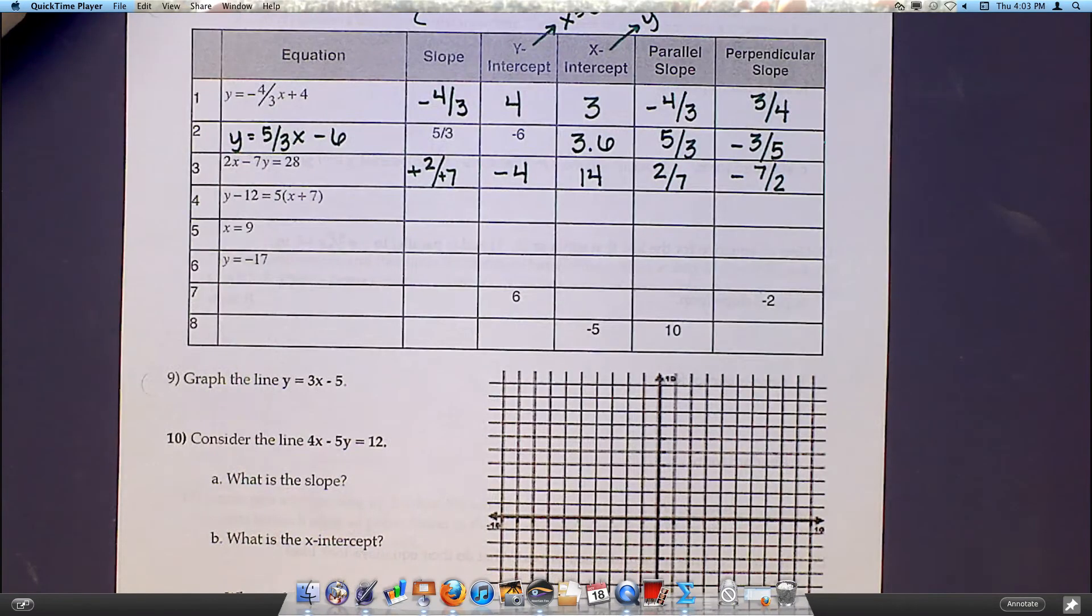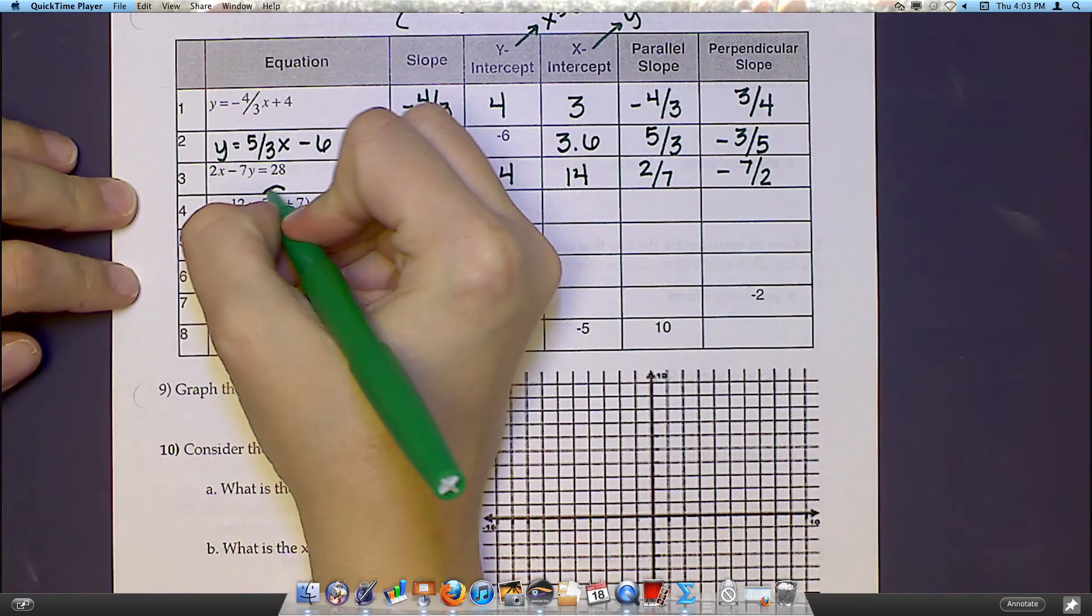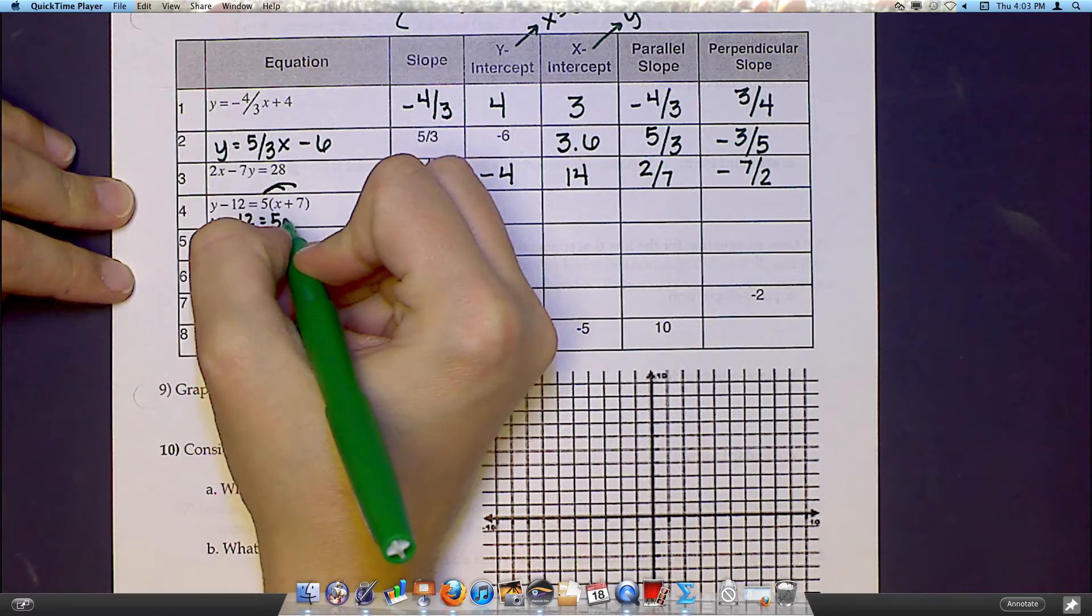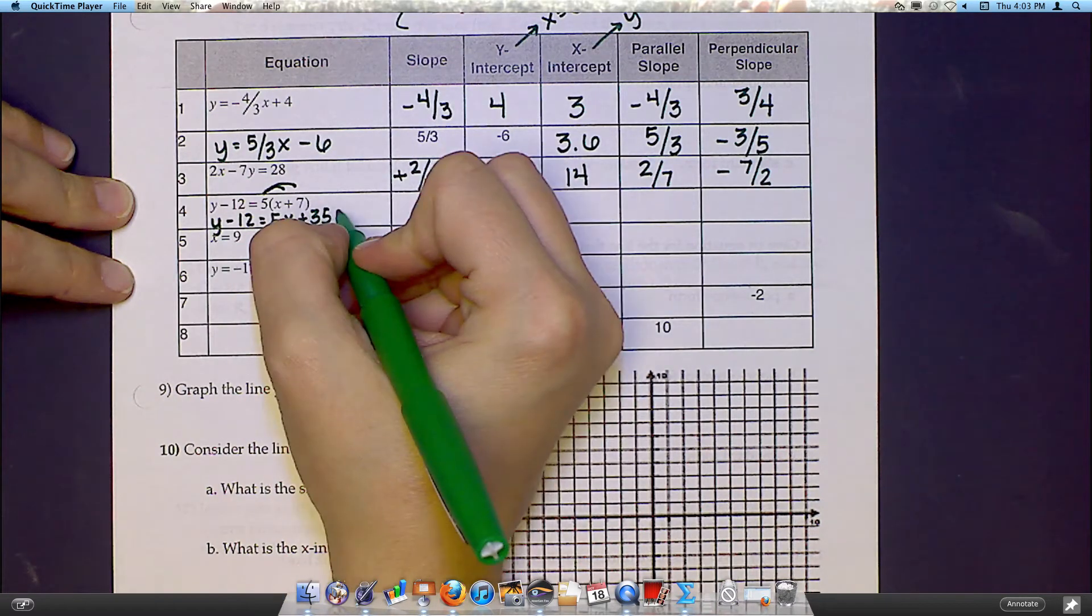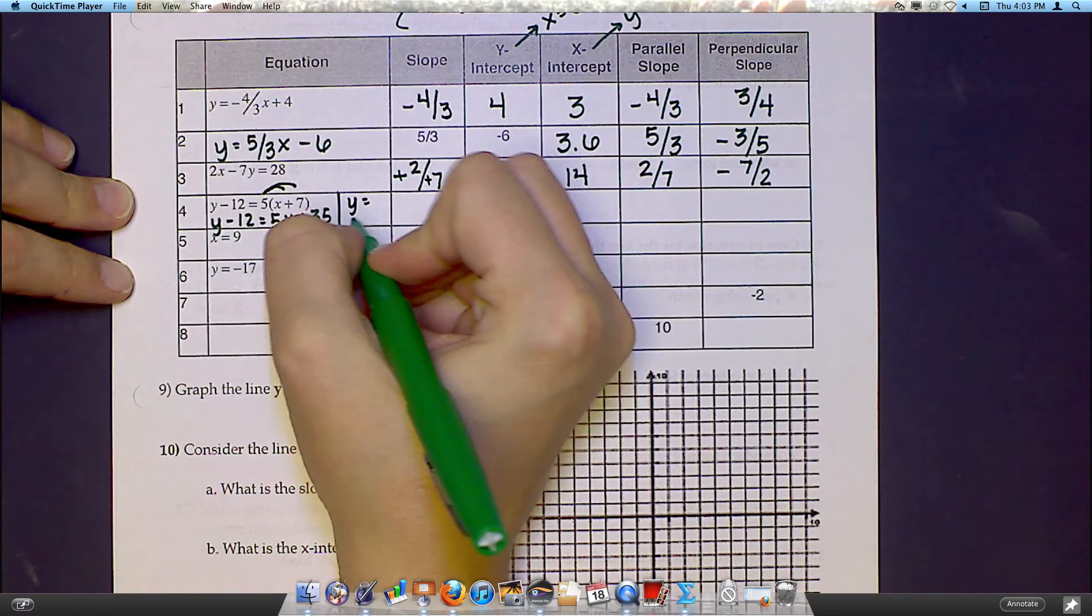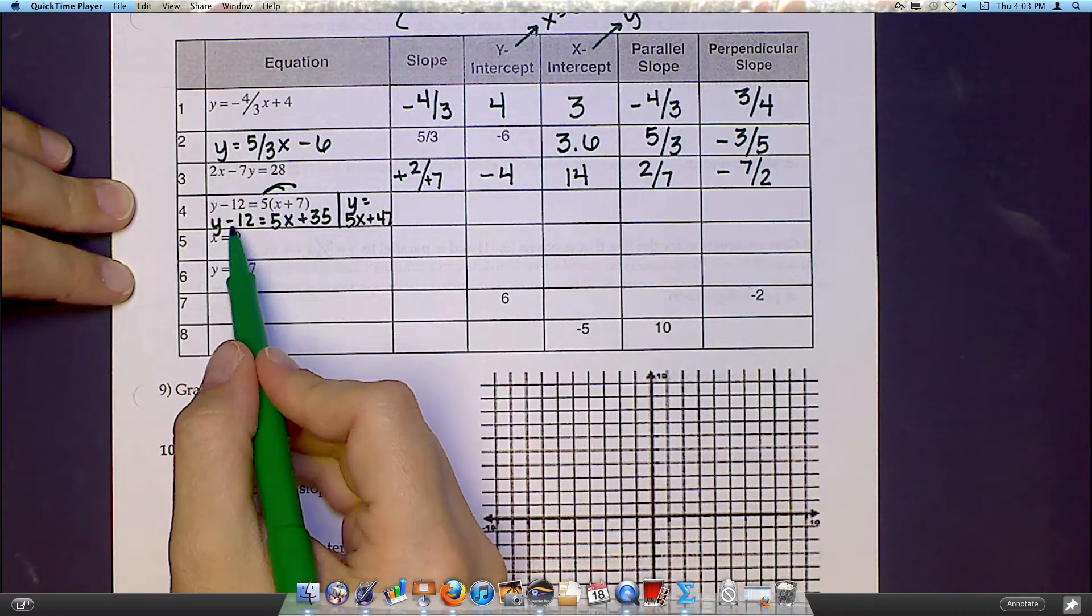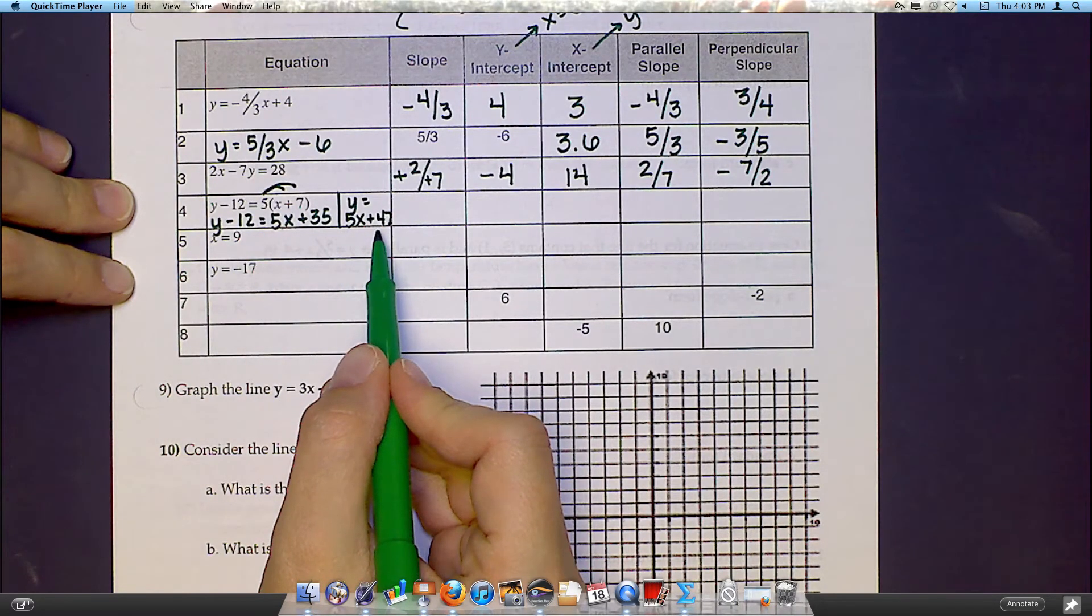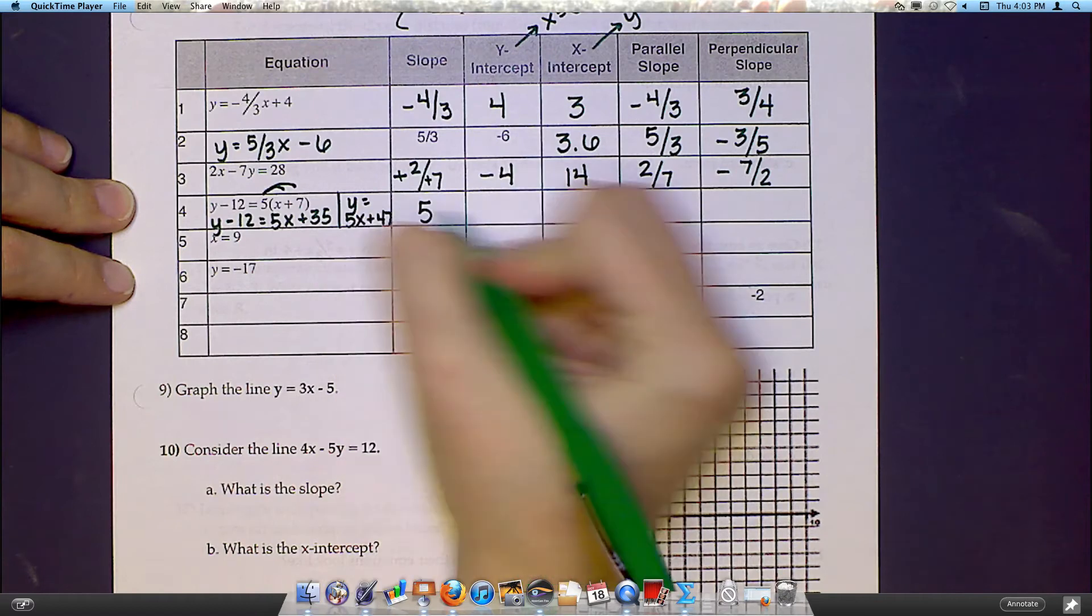Number 4. Before I start number 4, I would probably simplify it. So I'm going to distribute this 5, and I would end up with y minus 12 equals 5x plus 35. And then, if I move the 12 over to the other side, I actually end up with y equals 5x plus 47. I hope you can follow that okay. Basically, I just added 12 to both sides, and that's how my 35 turned into a 47. Now, once again, I'm in slope-intercept form. So there's my slope, there's my y-intercept, 5 and 47.